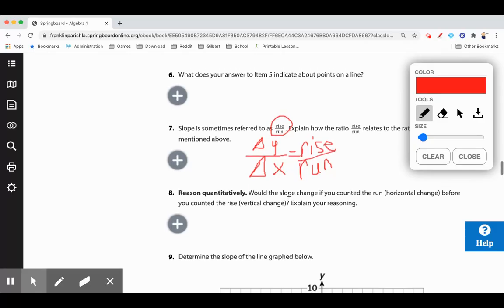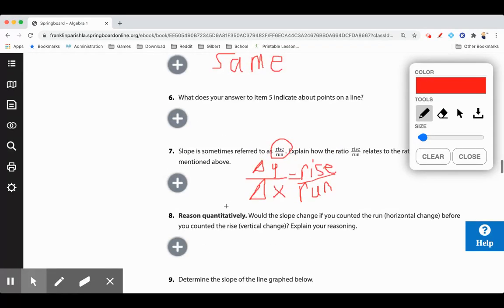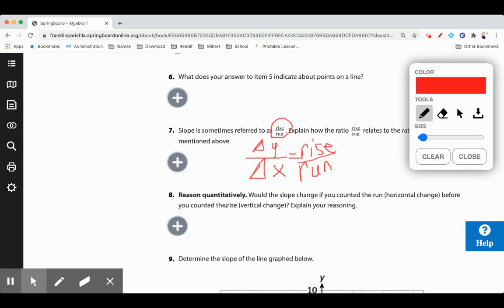Would the slope change if you counted the run before you counted the rise? Not really. As long as you don't put it into the equation like that. You can go look up your horizontal distance and look up your vertical distance, but it doesn't matter which order you look them up in as long as you know that rise over run is the answer.